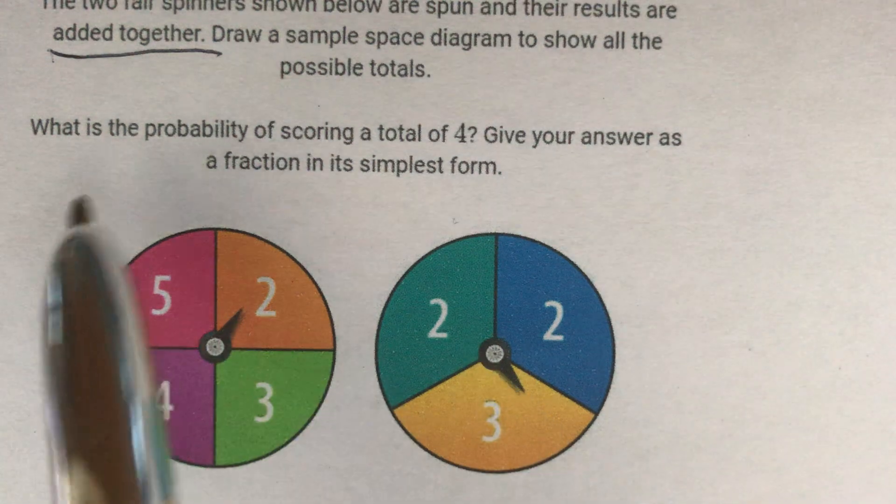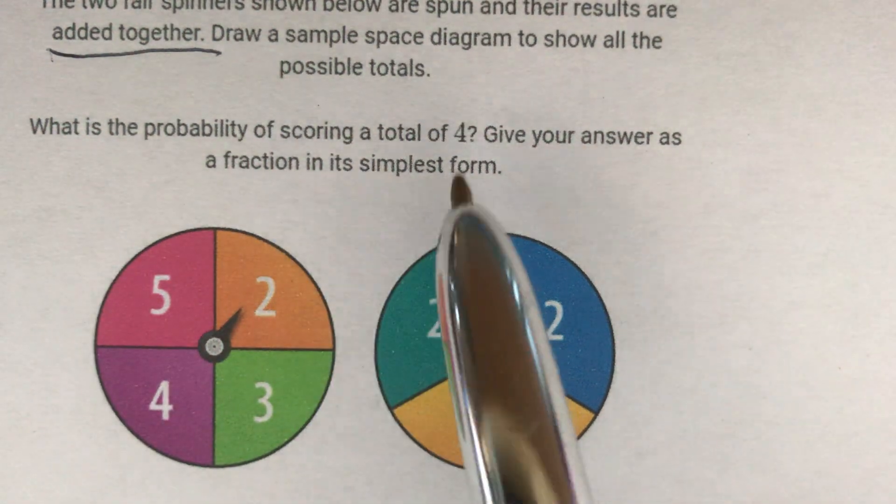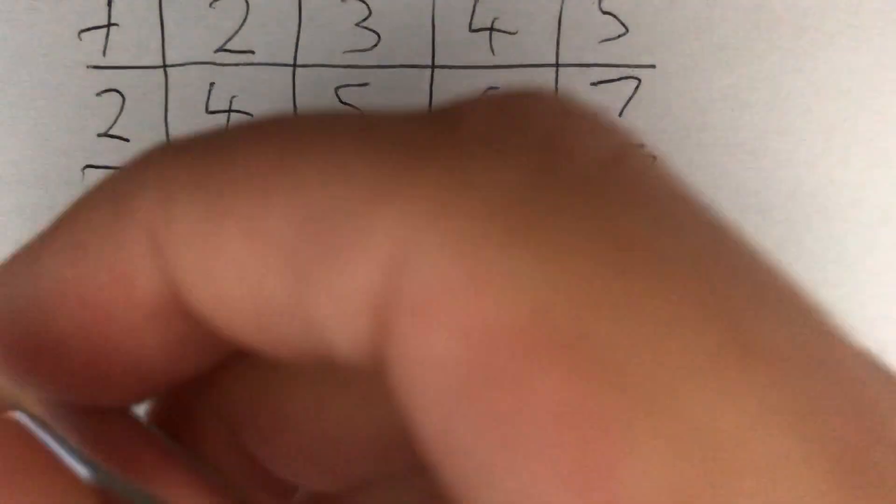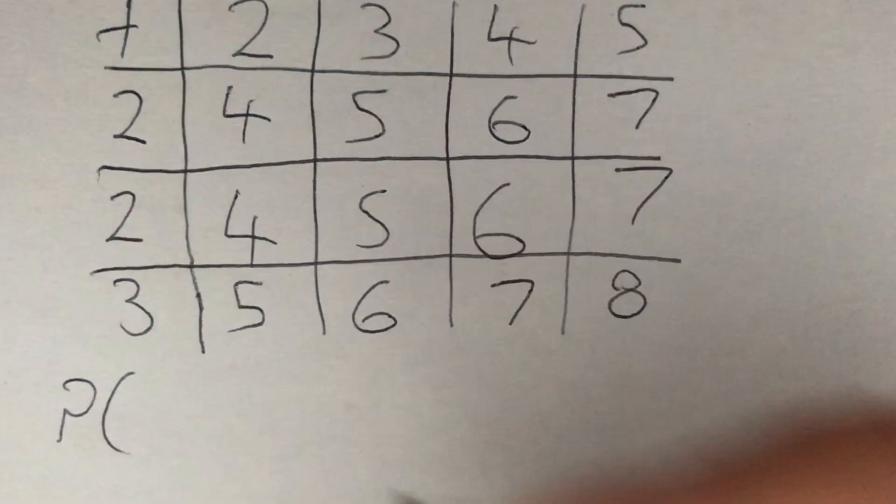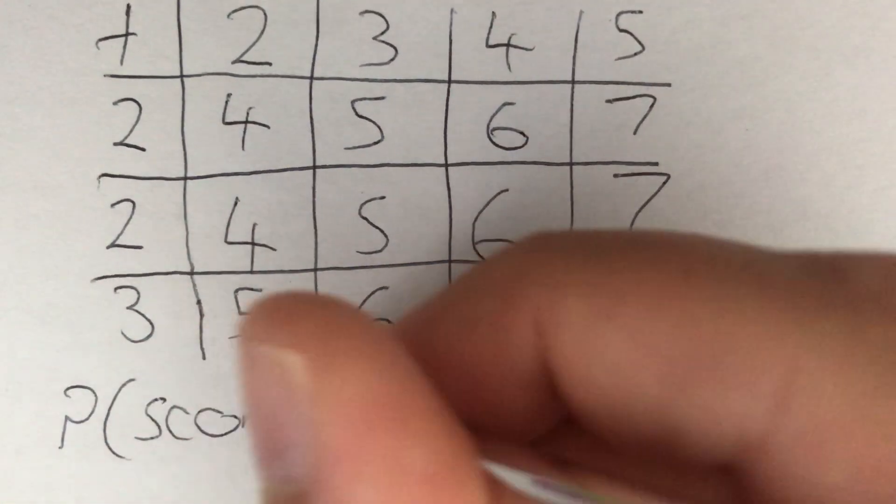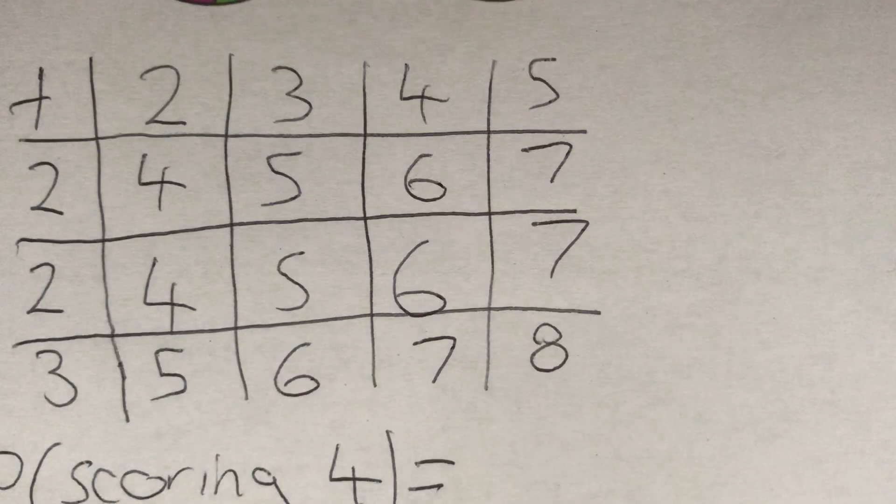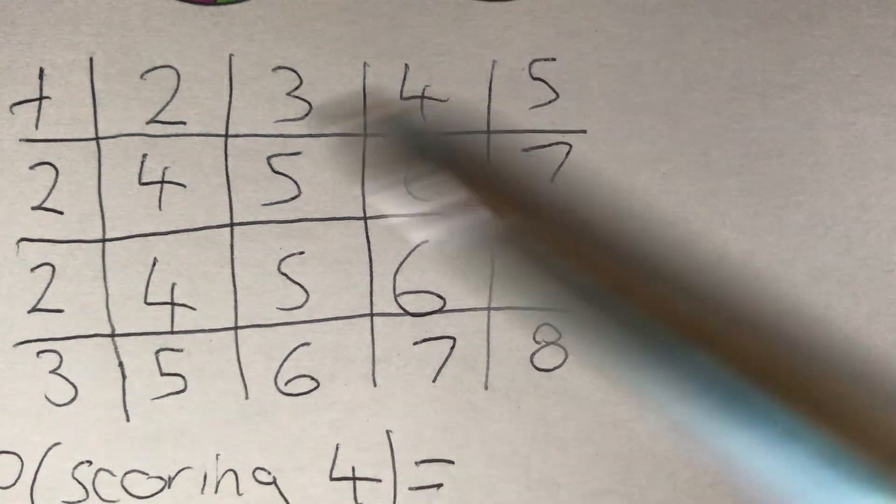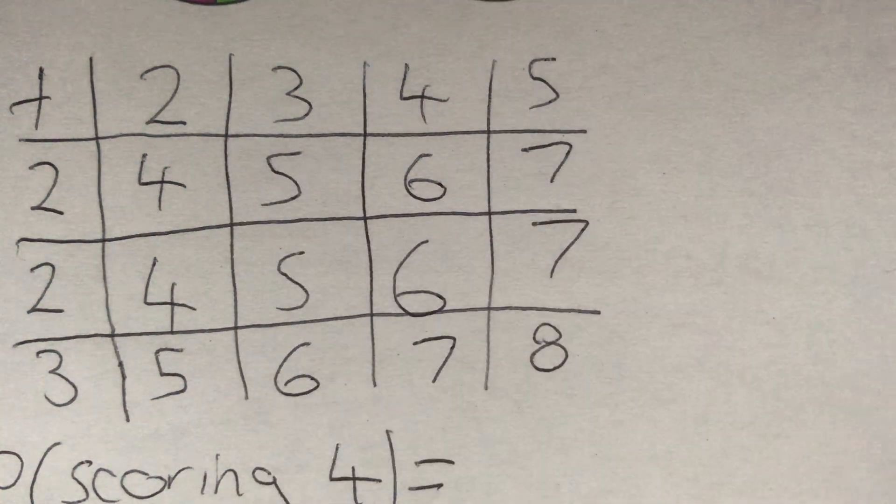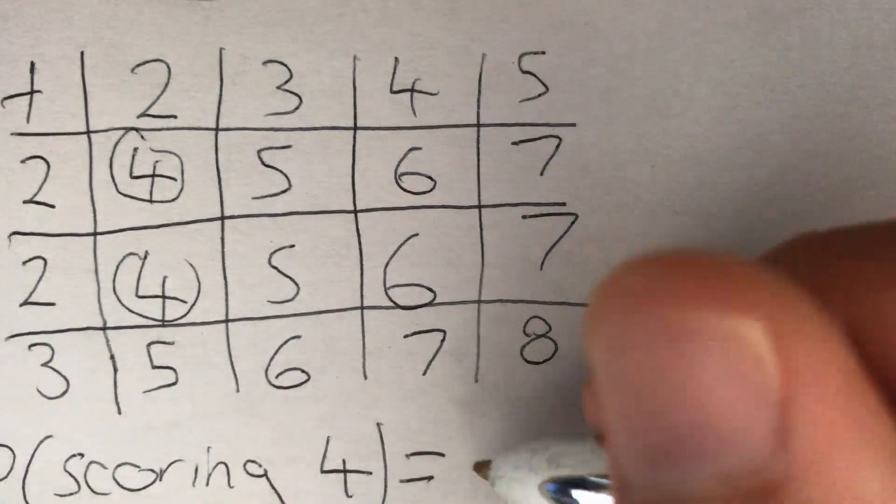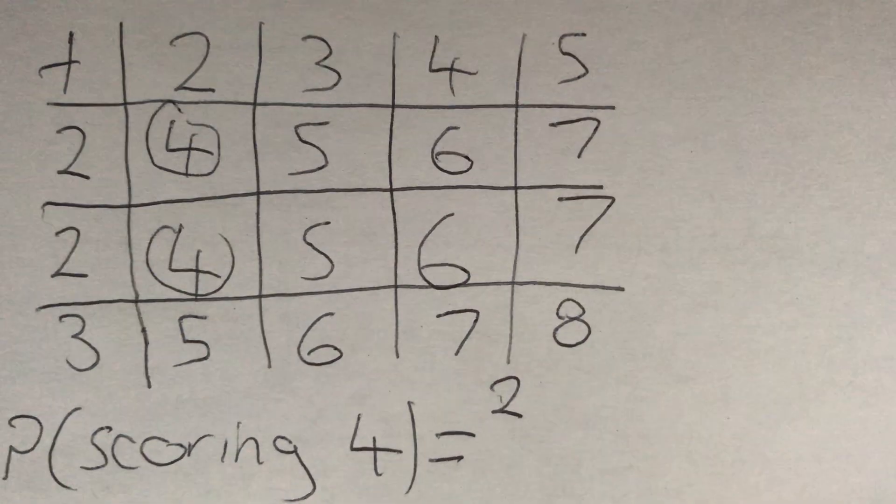The second part of our question asks what is the probability of scoring a total of 4. We need to count up the number of outcomes where we get 4. How many outcomes do we get 4? It's just these two here, when we get a 2 and another 2. So it's 2 of our possible outcomes that give us a score of 4.